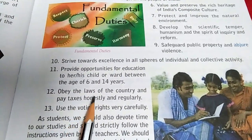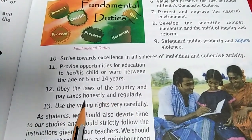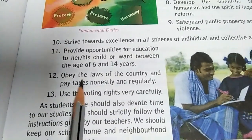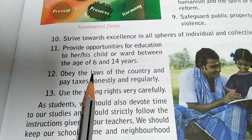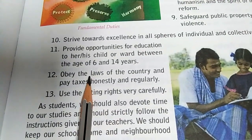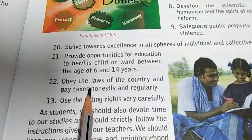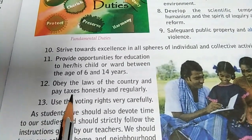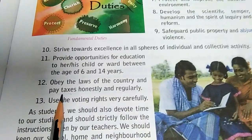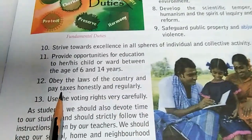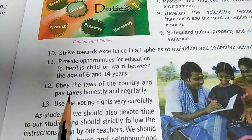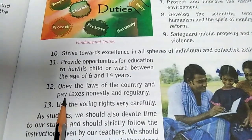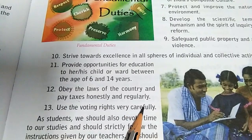Then, obey the law of the country and pay taxes honestly and regularly. We should obey the law of the country — only then can you become an ideal and responsible, law-abiding citizen. Every person has some income, whether through business or through a job, and so they should pay their taxes honestly and regularly.